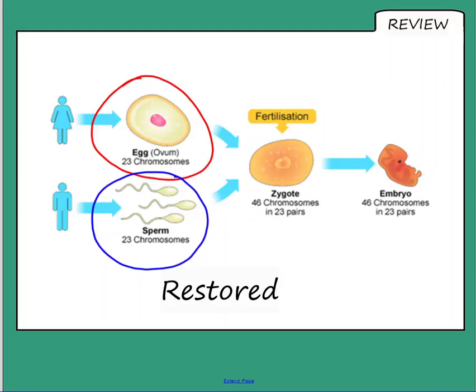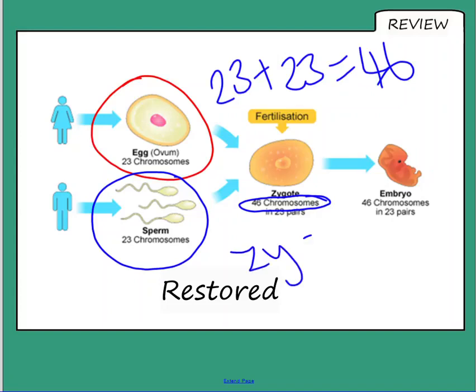And the nuclear fusion means that both the 23 chromosomes, so 23 plus 23 equals 46. So you get 46 chromosomes, and that forms a fertilized egg, which we call a zygote.